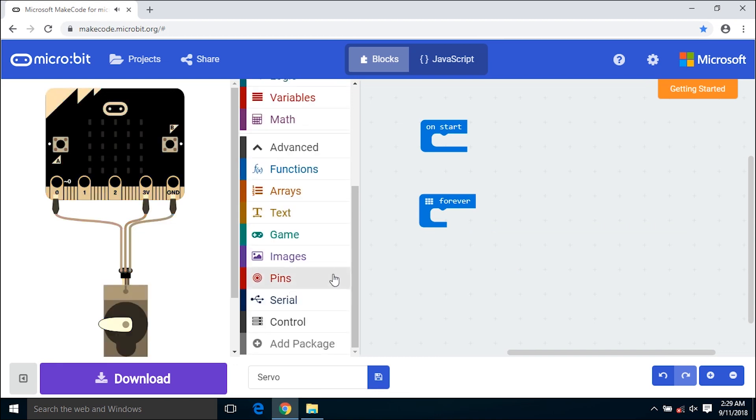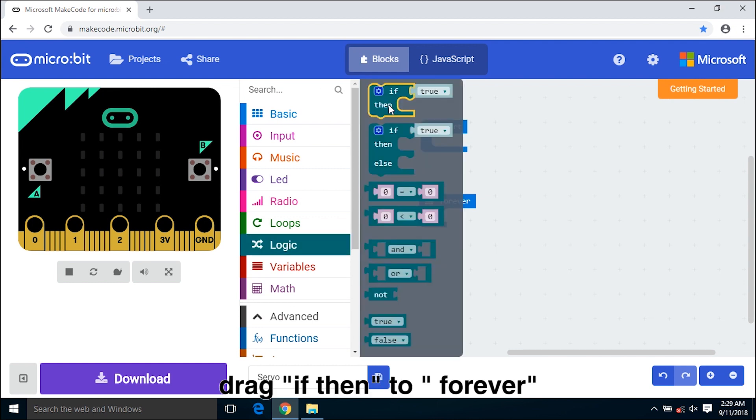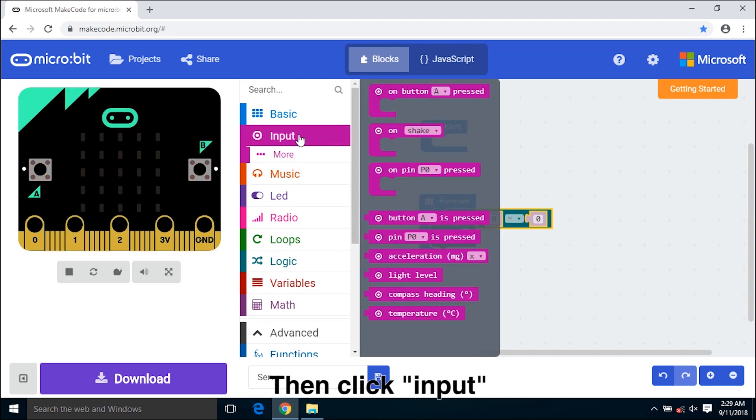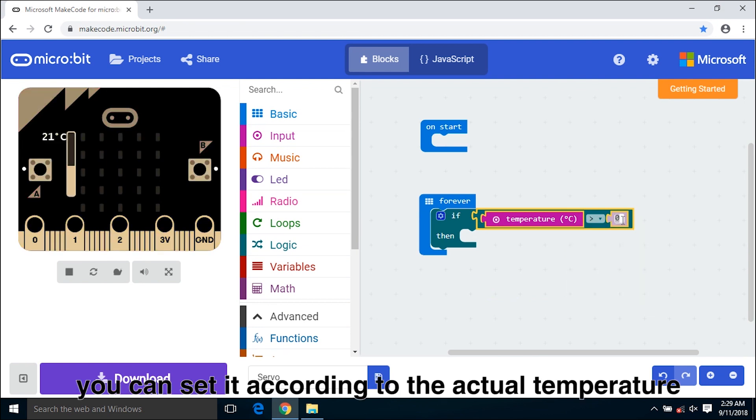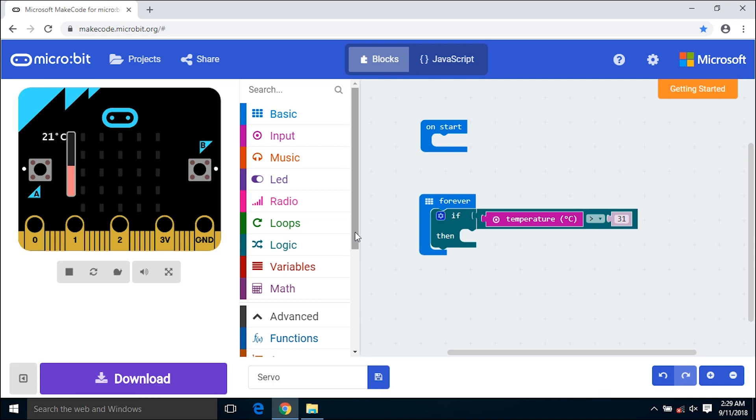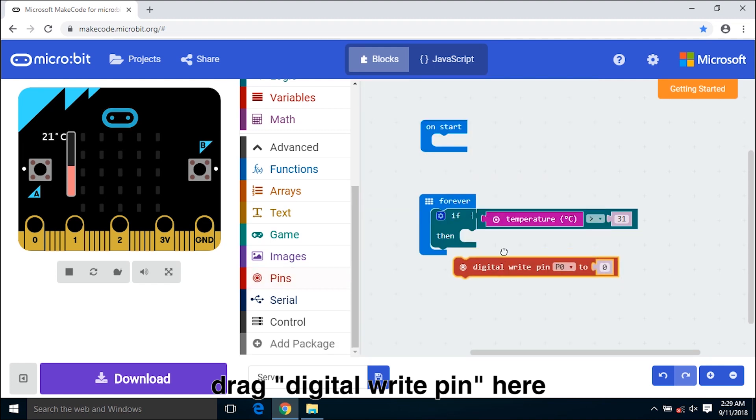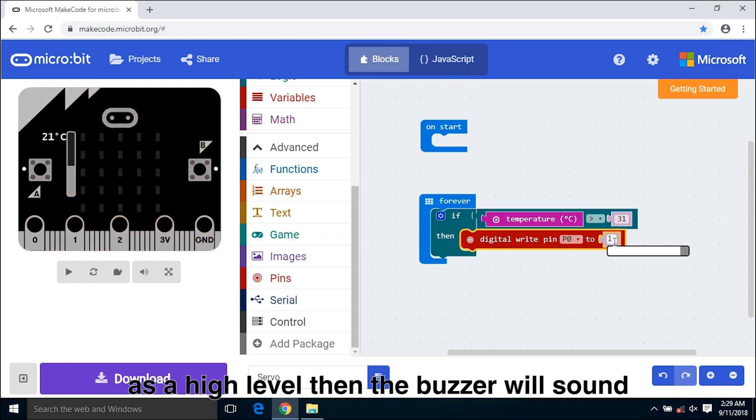Then we have to use the programming tool, drag here to delete. Click logic, drag it into forever. Click logic again and drag the block here. Click input, temperature, set over 31 degrees. You can set it according to the actual temperature. Click pins, drag digital write pin here and set P0 to 1 as a high level, then the buzzer will sound.